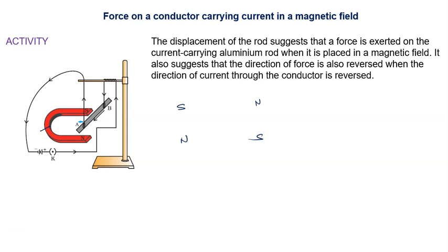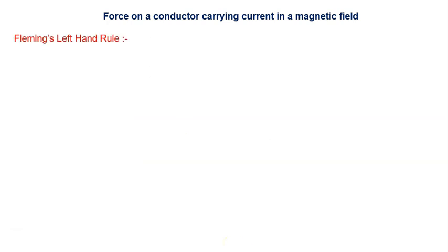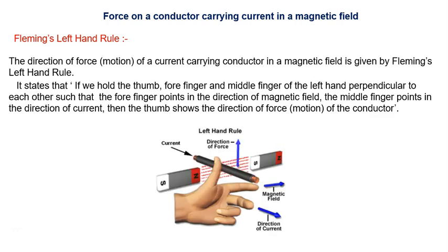To find the direction of the force, we use Fleming's Left Hand Rule. According to this rule, if we stretch the thumb, forefinger, and middle finger of the left hand such that they are mutually perpendicular to each other, then the forefinger gives the direction of the magnetic field, the middle finger gives the direction of the current, and the thumb shows the direction of the force or motion. You can remember this using the mnemonic FBI: thumb for Force, forefinger for magnetic field B, and center finger for current I.